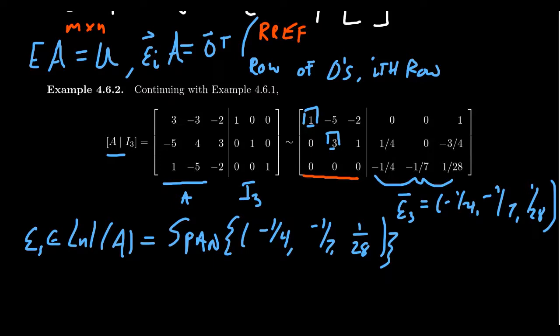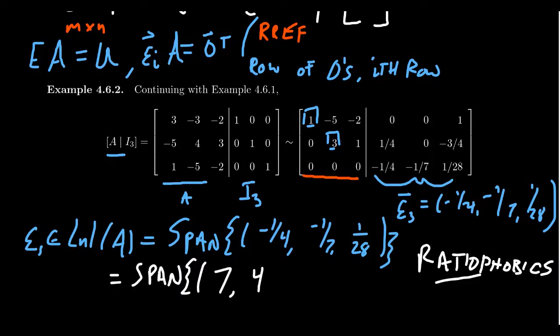Now, if you don't like the fractions here, I mean, because after all, many of us in the viewing audience right now might be ratio-phobics. So some of us are afraid of fractions, right? If you don't want fractions here, you could scale everything in this vector by 28, the least common denominator. In which case, then you can replace the spanning set with this time the vector, I'm actually going to times everything by negative 28. So this gives us seven, four, and negative one as a basis for the left null space.